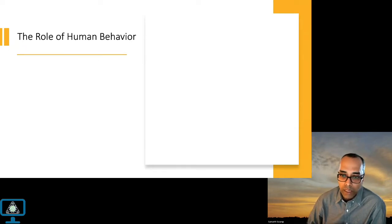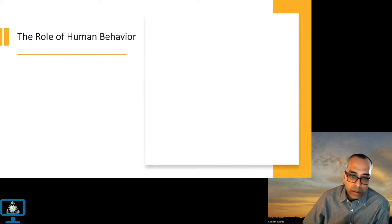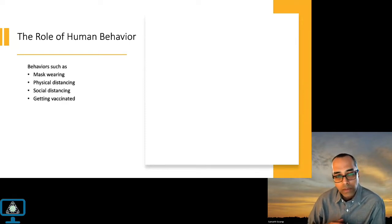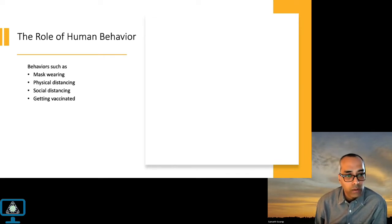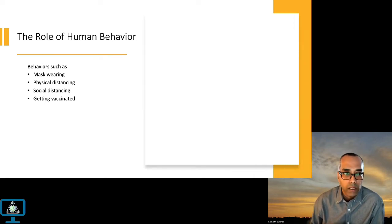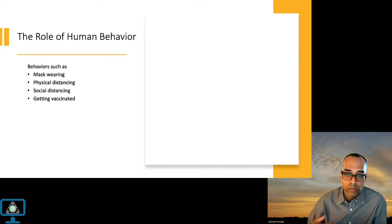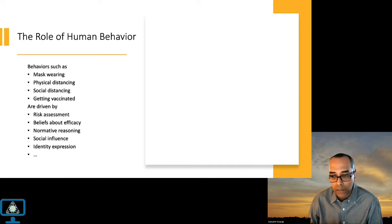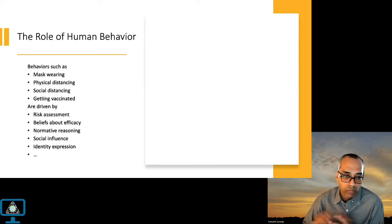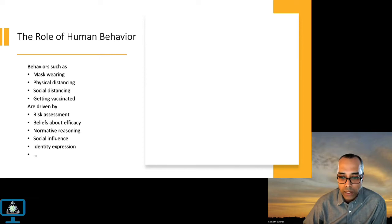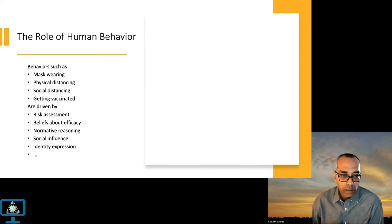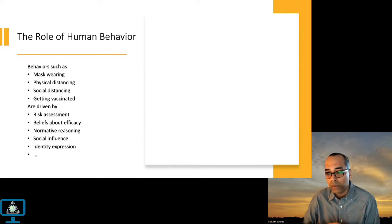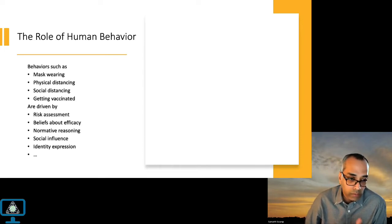The early part of the epidemic was really driven by human behaviors. Vaccinations and pharmaceutical interventions came later. Behaviors such as mask wearing, keeping physical distance when interacting, and keeping social distance — meaning changing routines to stay home more — were key. These behaviors are driven by many things: people assess their risk, they have beliefs about the efficacy of behaviors, they do normative reasoning about what they're expected to do, they're influenced by their social network, and there's also identity expression such as political orientation.